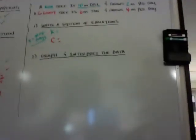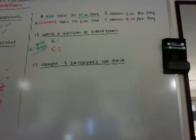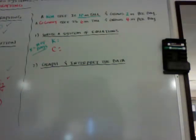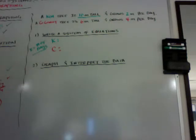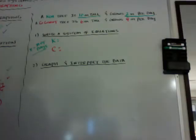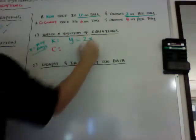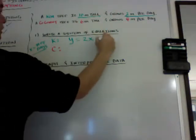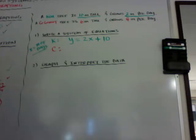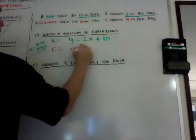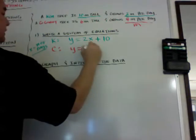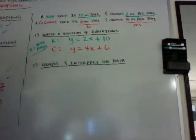Another style of question asks you to write your own system of equations, graph it, and interpret the data. For example: a koa tree is 10 meters tall and grows 2 meters per day; a coconut tree is 6 meters tall and grows 4 meters per day. If x equals the number of days, then for the koa tree: y = 2x + 10, where 2 is the slope and 10 is the y-intercept. For the coconut tree: y = 4x + 6, where 4 is the slope and 6 is the y-intercept. That's how you write a system of equations.